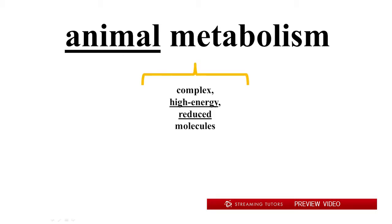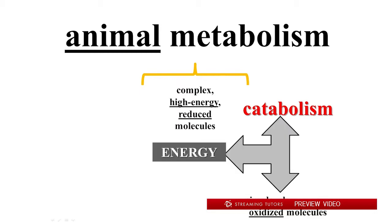Metabolism is what we do with complex, high-energy reduced molecules — that is, chemically reduced compounds. In catabolism, which is a subset of metabolism, organisms burn these high-energy reduced compounds down to simpler, more oxidized compounds, extracting energy as they do. We'll see a little bit more about that now, and a great deal more in the next several segments where we look at the details of the central flow of matter through metabolism.